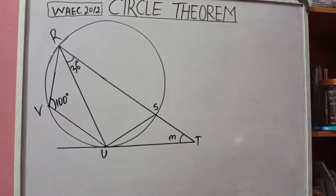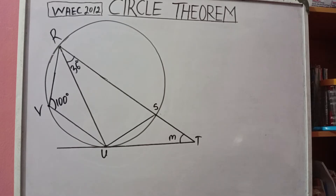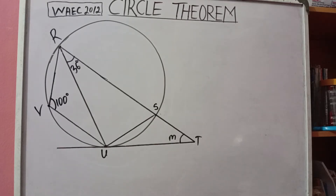Hello viewers, welcome to my channel. Today we shall be looking at yet another question on circle theorem. It's a Y question 2012, where we are required to find the value of angle STU, which is labelled as angle M. We are given angle RVU as 100 degrees and angle SRU as 36 degrees.